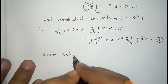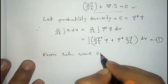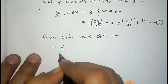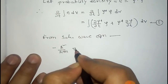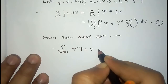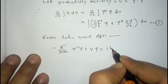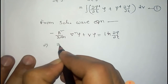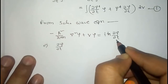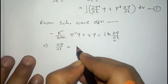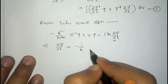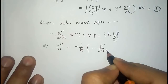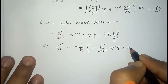From the time-dependent Schrödinger wave equation: (−ℏ²/2m)∇²ψ + Vψ = iℏ ∂ψ/∂t. From this we get that ∂ψ/∂t equals (i/ℏ) times [(−ℏ²/2m)∇²ψ + Vψ]. We take this as equation number two.